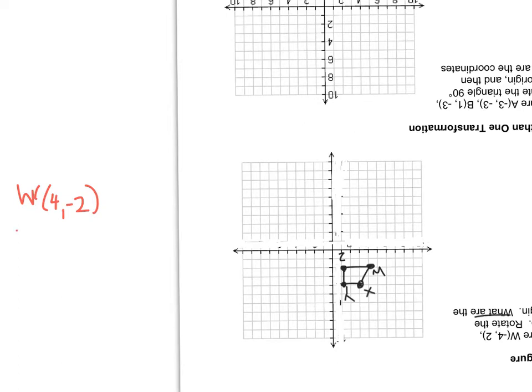Where X is, is now at 3, negative 4, because it's 3 to the right, 4 down. Y is now at 1, negative 4. And Z is now at 1, negative 2.